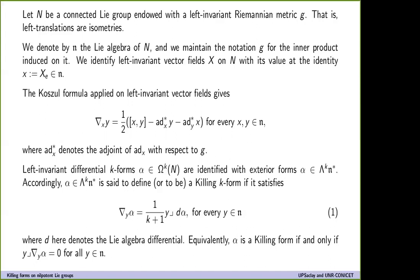Left-invariant differential forms on the Lie group will be identified as exterior forms at the Lie algebra level. Regarding the definition of killing forms, this translates directly as a formula for left-invariant forms and left-invariant elements of the Lie algebra. Here D denotes the Lie algebra differential. Equivalently, alpha is a killing form if and only if the interior product of an element with the covariant derivative of the form equals zero for every element in the Lie algebra. I will use this characterization later.